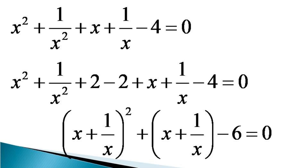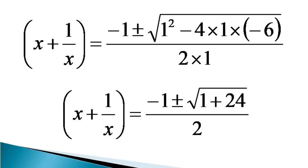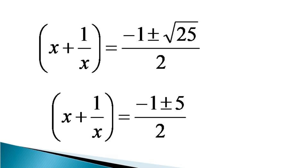This equation is a quadratic equation in (x plus 1/x). The value of x plus 1/x can be found using the quadratic formula: x plus 1/x equals minus 1 plus or minus under root of 1 squared minus 4 times 1 times minus 6, all divided by 2 times 1. This simplifies to minus 1 plus or minus under root of 1 plus 24 over 2, which further simplifies to minus 1 plus or minus root 25 over 2, giving minus 1 plus or minus 5 over 2.